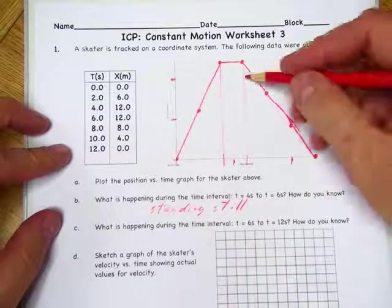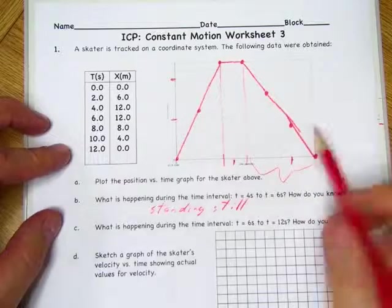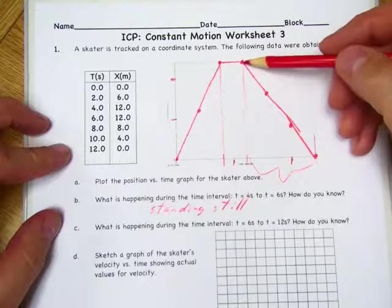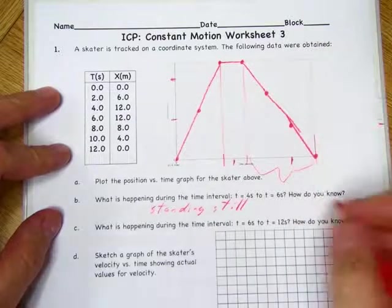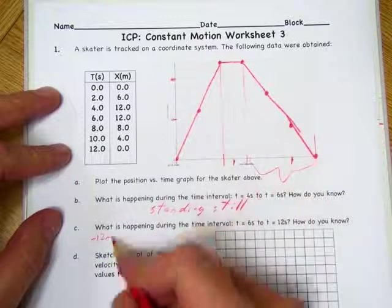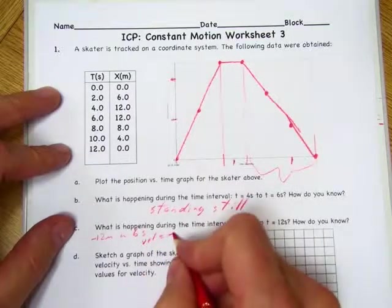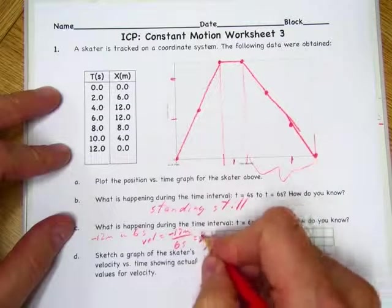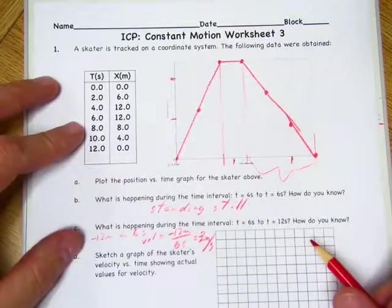What's happening during 6 seconds to 12 seconds? That's in this area here. Well, it's certainly moving in a negative direction. The question is how fast? It went from 12 meters back to 0. So it moved negative 12 meters from 6 to 12 in 6 seconds. So our velocity is negative 12 meters over 6 seconds, so 2 meters per second in the negative direction for 6 seconds.